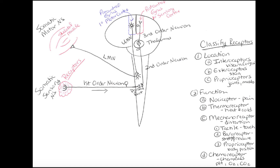Which root does the sensory neuron come into the spinal cord through — dorsal or ventral? These are exam questions you have to know. Sensory neurons enter the spinal cord through the dorsal root. That's the somatic sensory nervous system.